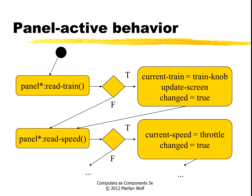Here is a state diagram for the panel activate behavior that generates the event indicating something changed on the panel. We're going to read the train knob first and see if that changed. If it did change, you're going to set the internal variables for the train knob and update the screen, and so forth. But if the train knob didn't change, check the speed knob. If that did change, then you set the throttle and so forth, and if that wasn't it, then you check the other knobs — the inertia and the emergency stop.